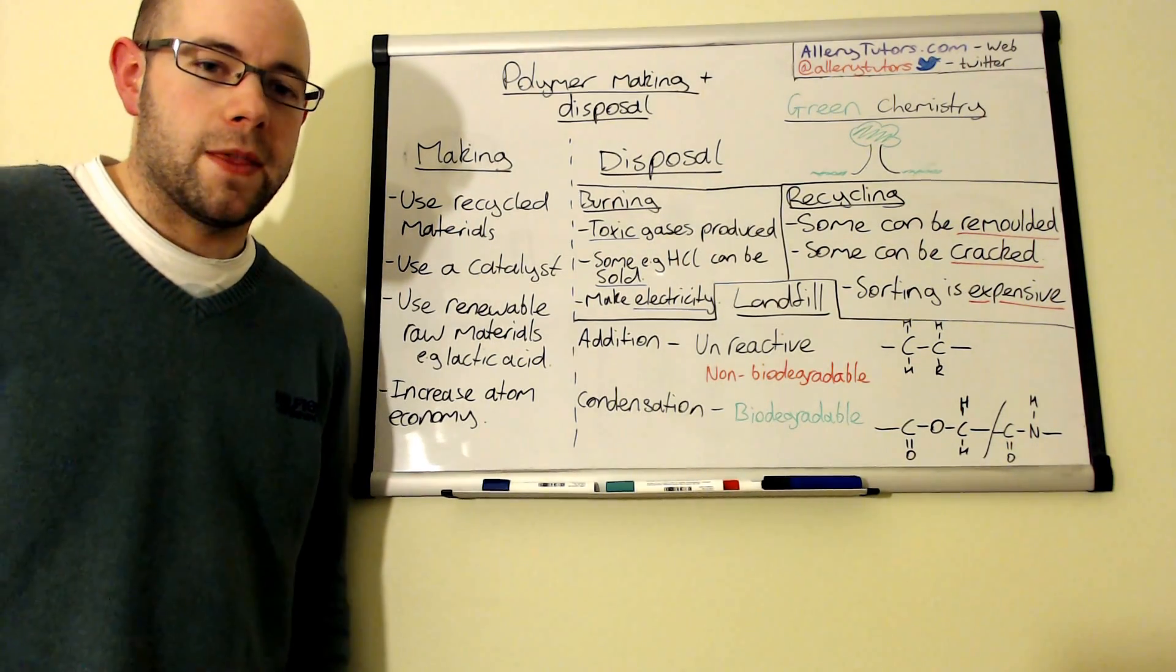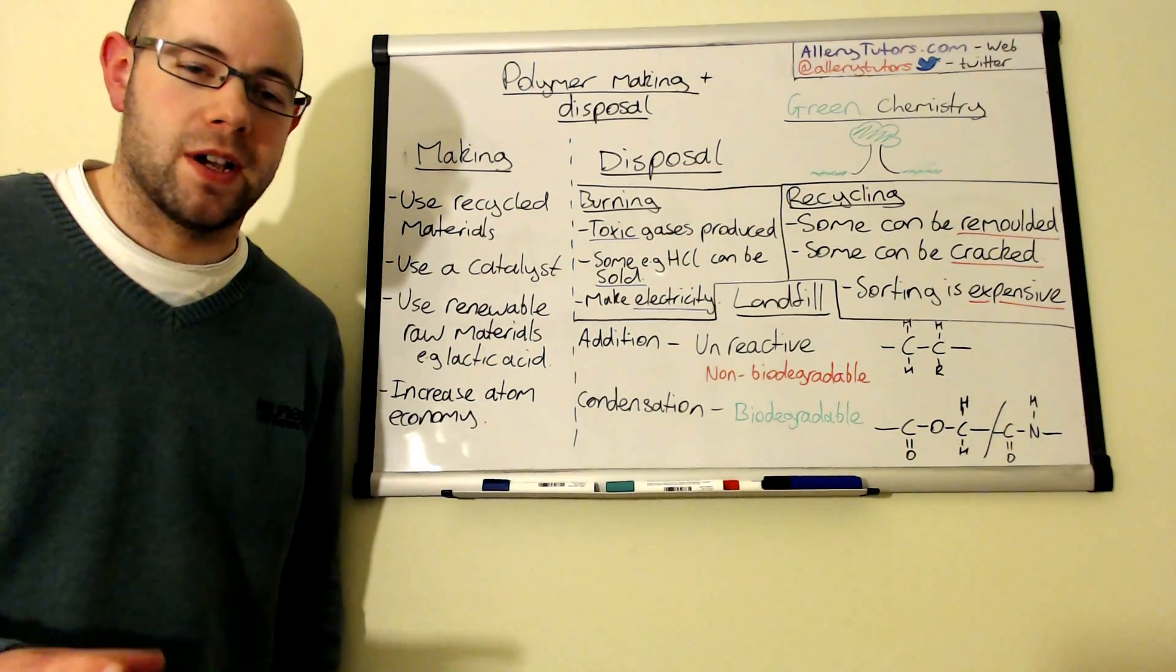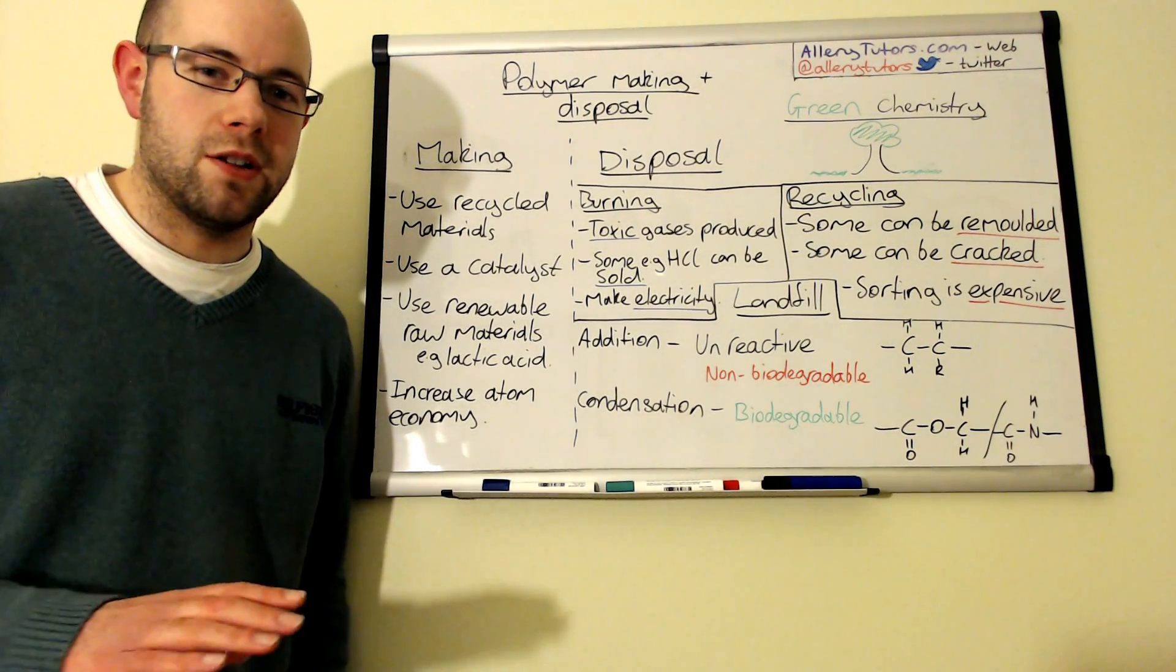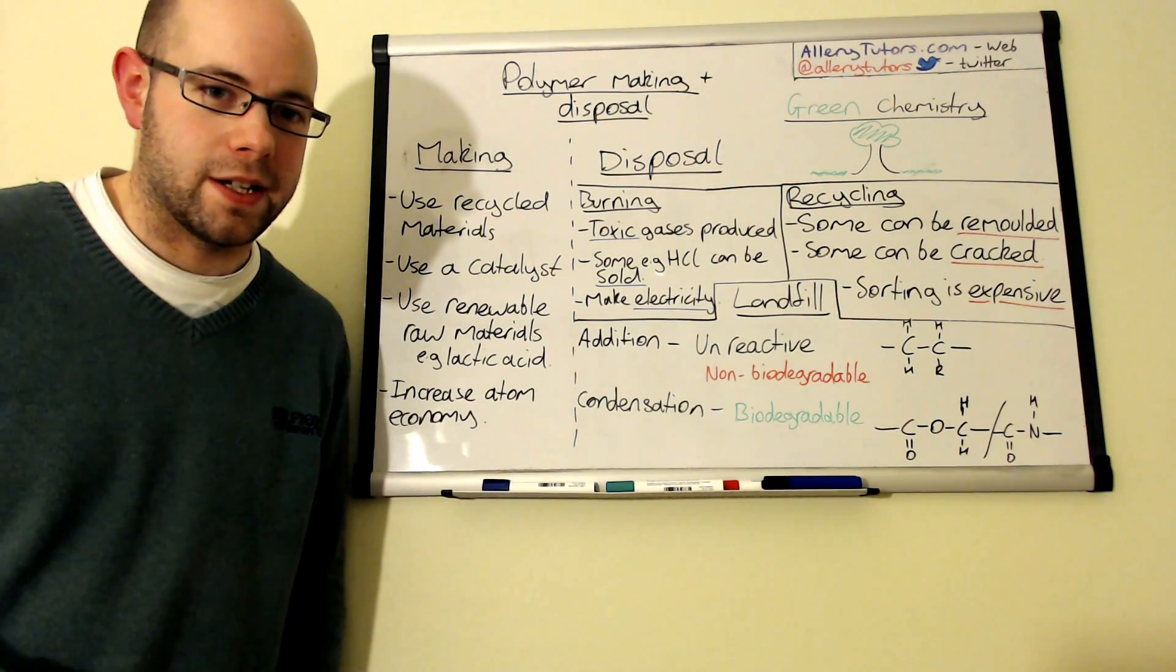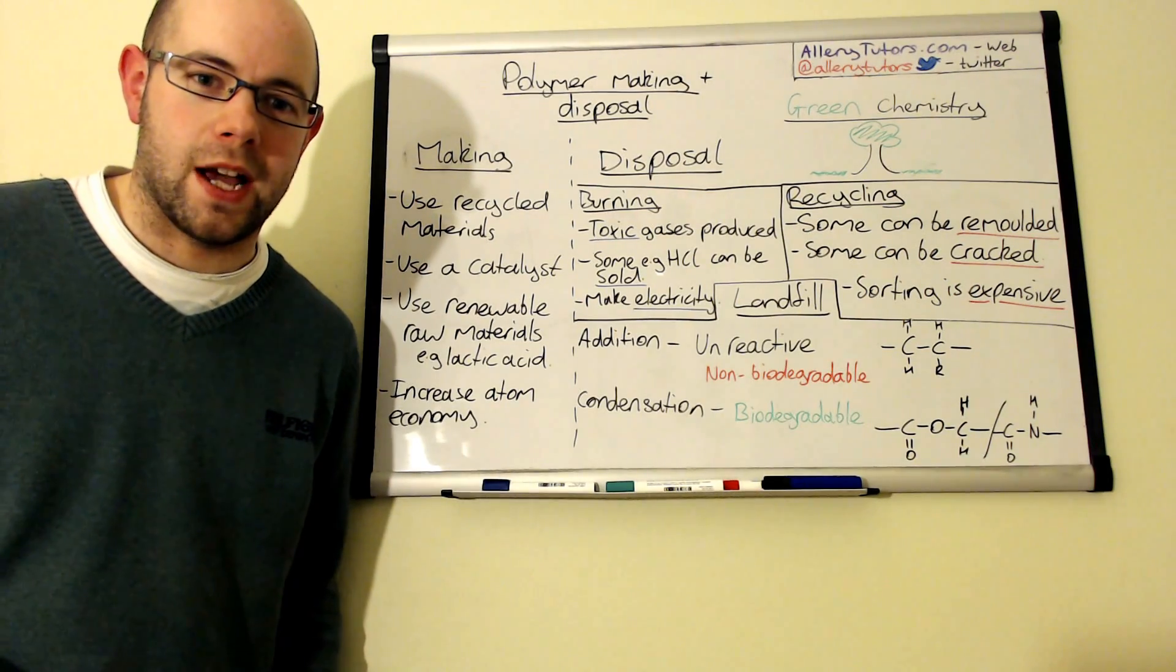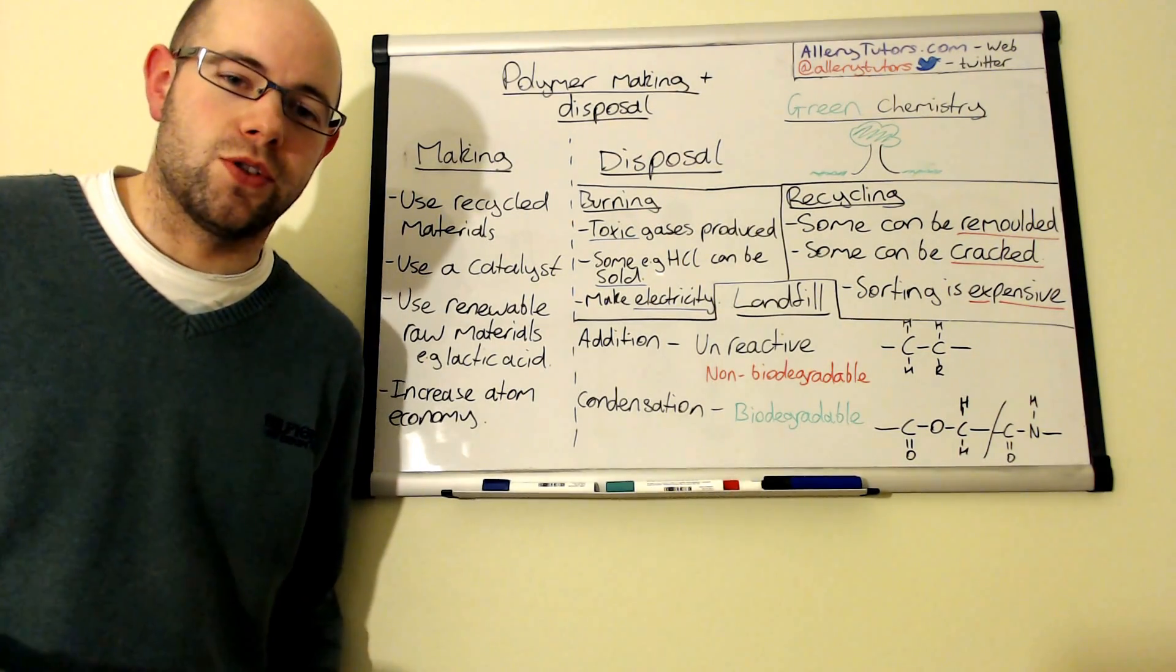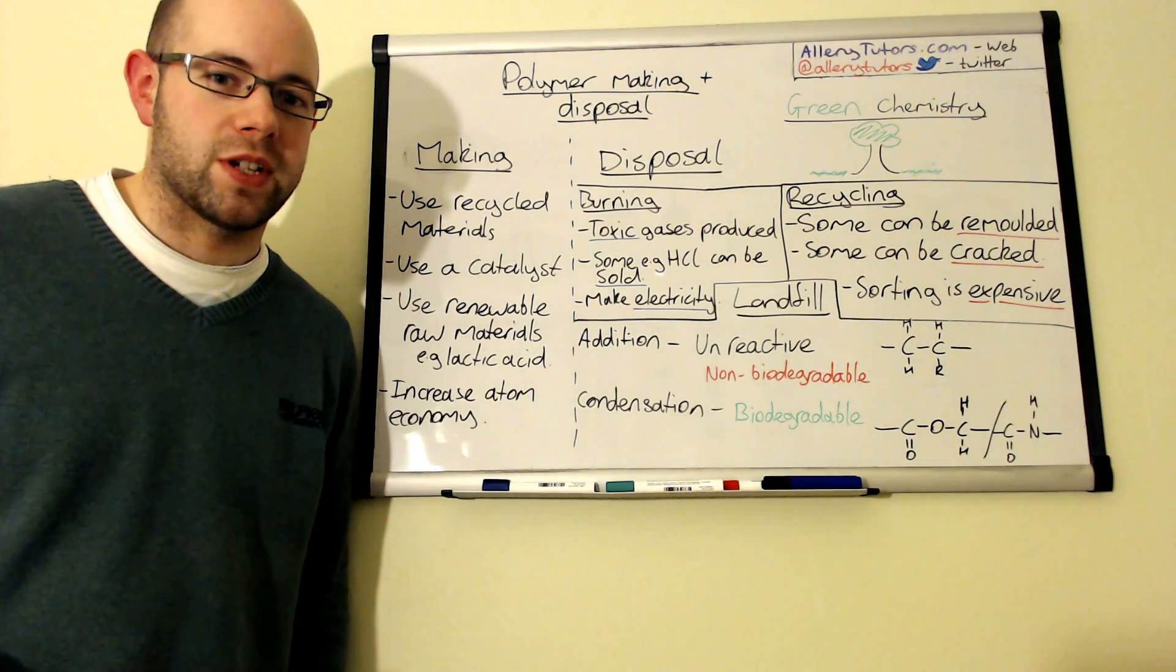So we're going to start with the making process. Plastics are used everywhere, they're becoming increasingly more common and they're used in just about everything, but the material that we use to make plastics is crude oil and that's a resource that's rapidly running out. So chemists are looking for new ways in which we can actually make plastics from more renewable sources or through recycling.